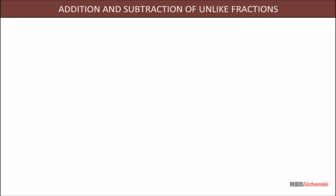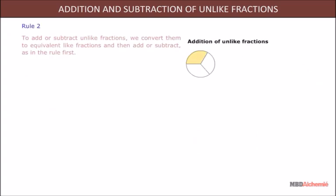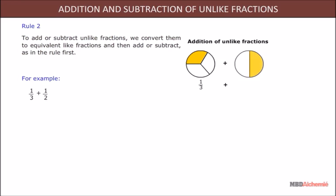Addition and subtraction of unlike fractions — Rule 2: to add or subtract unlike fractions, we convert them to equivalent like fractions and then add or subtract as in Rule 1. For example, 1/3 + 1/2.